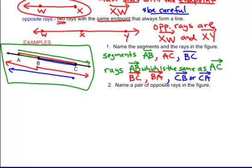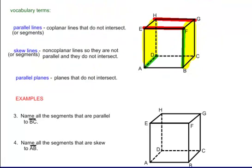So those are my segments and those are the rays. Lastly, there was one pair of opposite rays in the figure: ray BC and ray BA. Notice they have the same endpoint, B, and they're just going in opposite directions to form a line. Now, one last section: how do you name parallel lines, skew lines, and parallel planes?